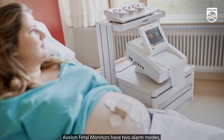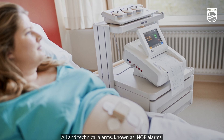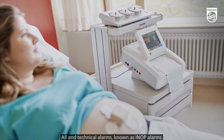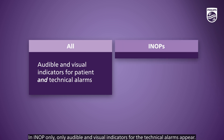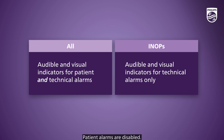Avalon Fetal Monitors have two alarm modes: All and technical alarms, known as in-op alarms. In All mode, patient and technical alarms are enabled with all audible and visual indicators. In in-op only mode, only audible and visual indicators for the technical alarms appear, and patient alarms are disabled.